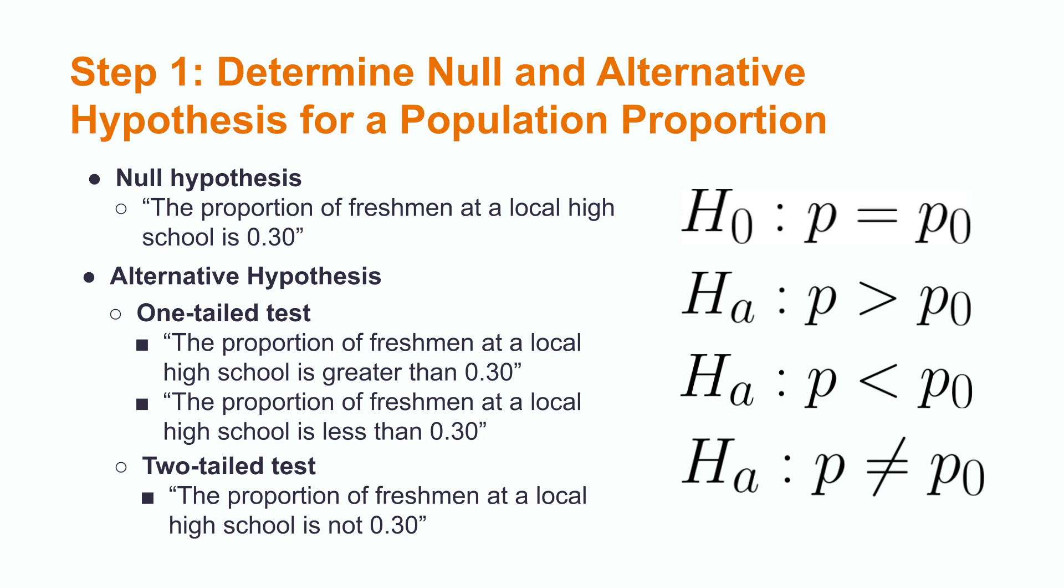The alternative hypothesis can be left-tailed, right-tailed, or two-tailed. Left and right-tailed alternative hypotheses are known as one-tailed. A right-tailed hypothesis is in the form of p is greater than p₀. An example of this would be: the proportion of freshmen at a local high school is greater than 0.30.